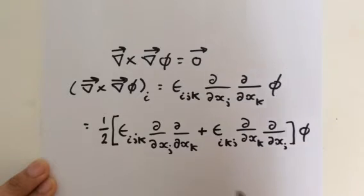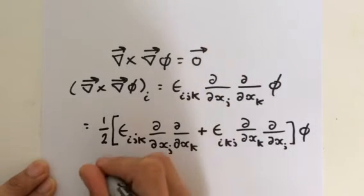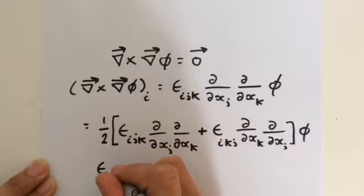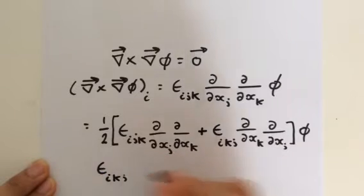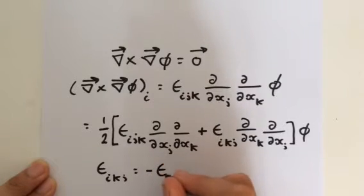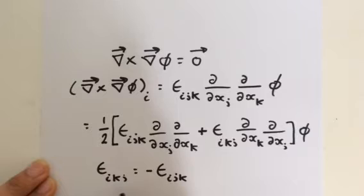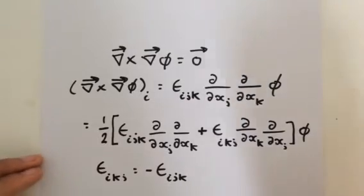Now let's look at these indices in more detail. If you understand the Levi-Civita symbol, you would understand this as well. Epsilon i, k, j equals the negative of epsilon i, j, k, because we've swapped the two indices around. So epsilon i, k, j would equal negative one if epsilon i, j, k was one. That makes sense.